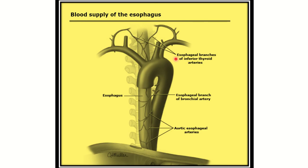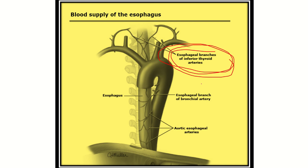The cervical part of the esophagus after esophagectomy is supplied by the esophageal branch of the inferior thyroid artery. In this picture we can also see the cervical esophagus and thoracic esophagus — the cervical esophagus is supplied by the esophageal branch of the inferior thyroid artery. The thoracic esophagus receives branches directly from the descending thoracic aorta.